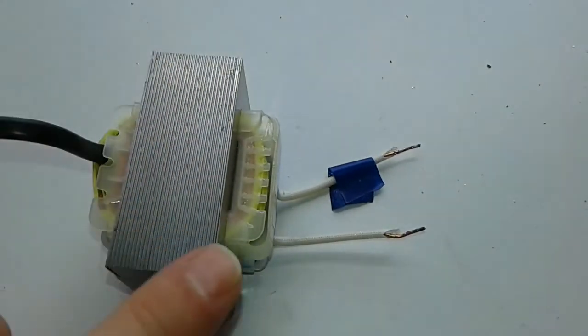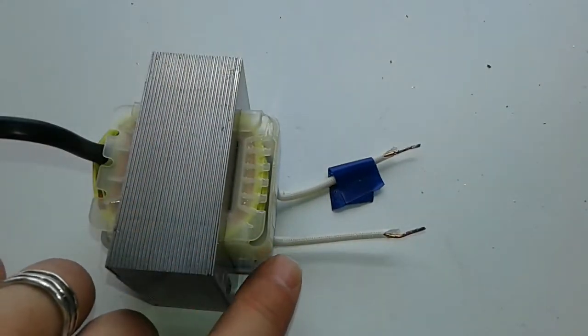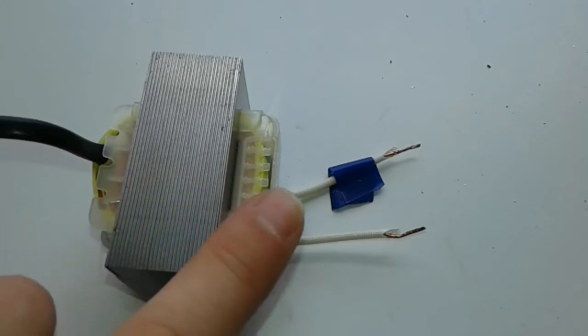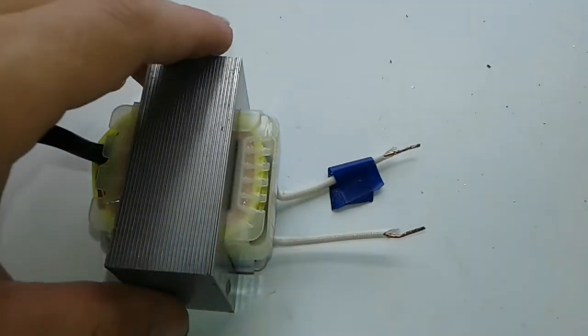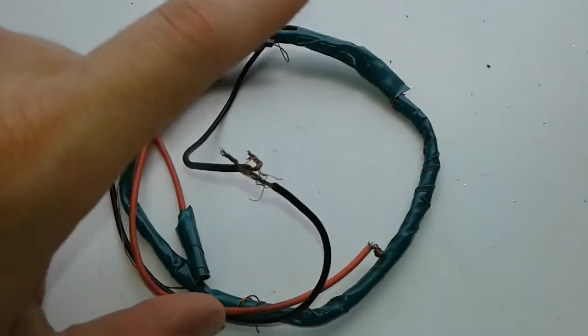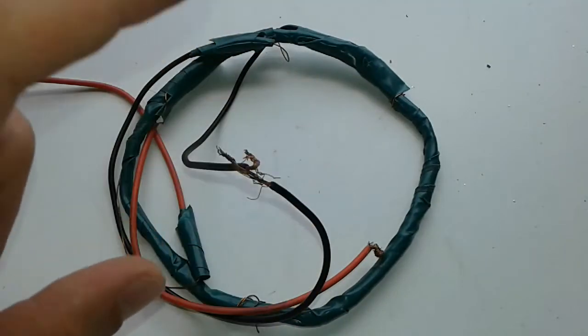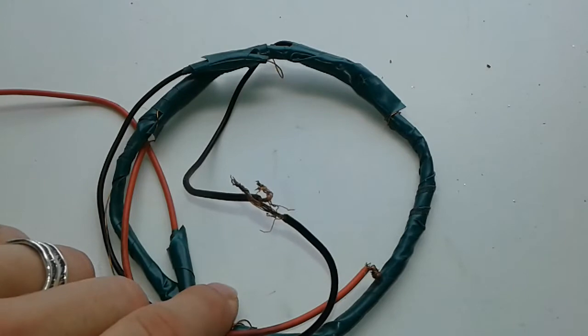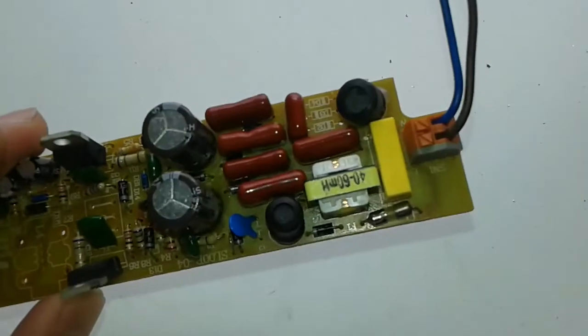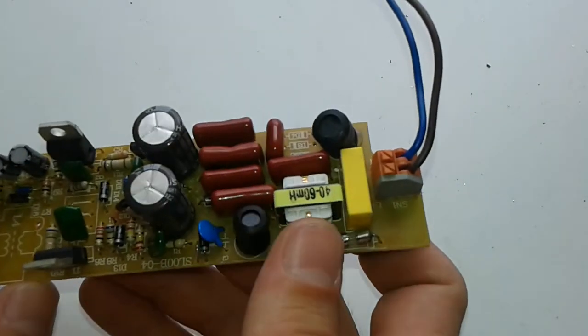Conversely, if the secondary has less turns than the primary, it's called a step-down transformer. And if the transformer has the same number of turns on the primary and secondary, it's called an auto transformer.